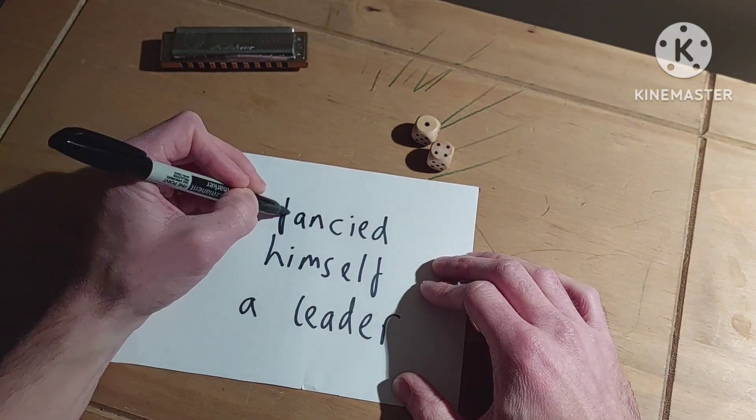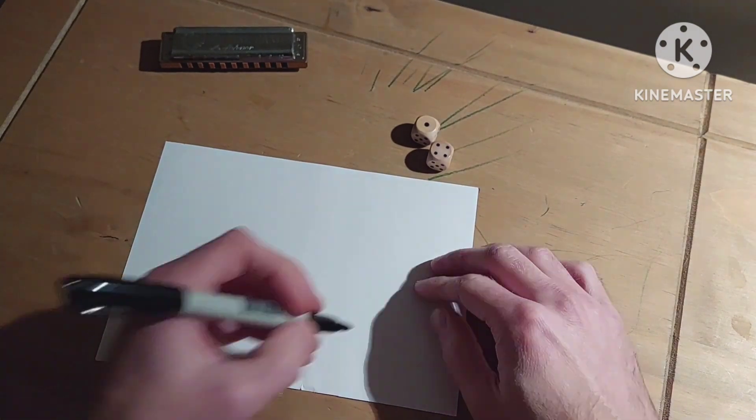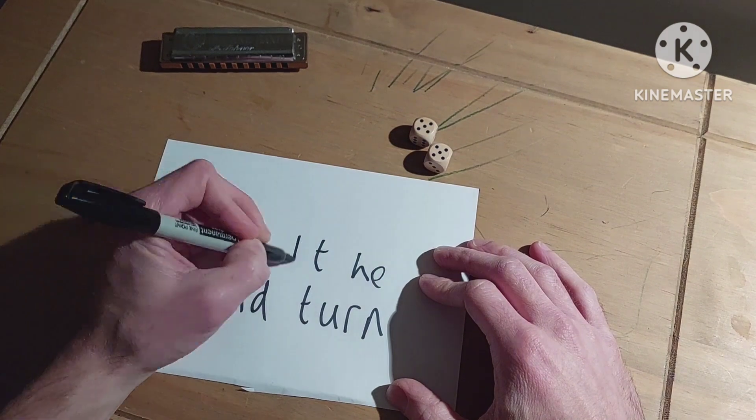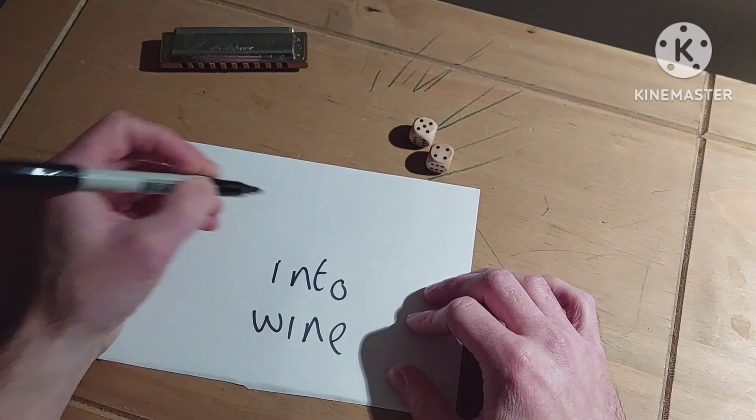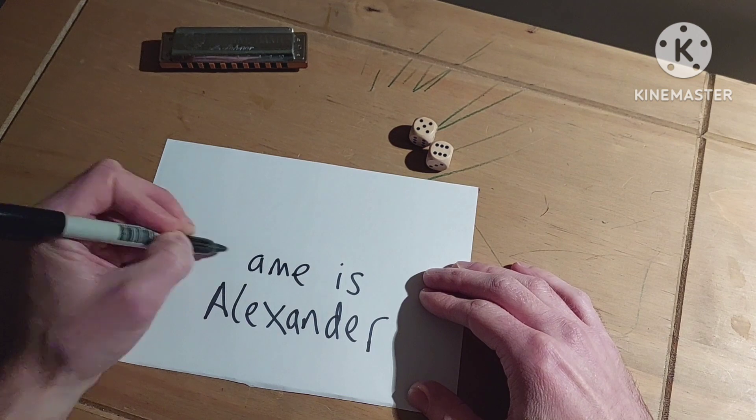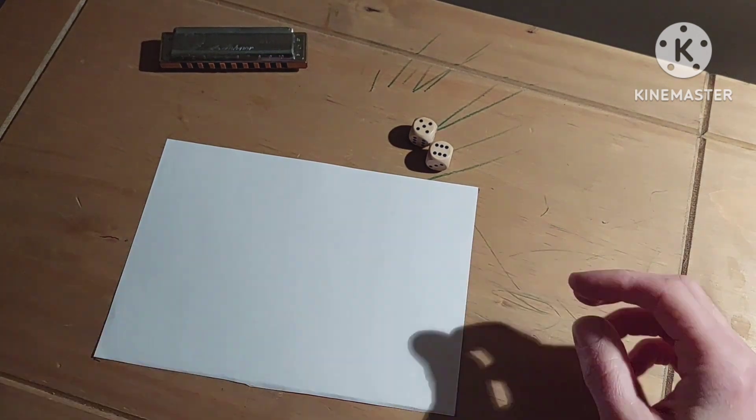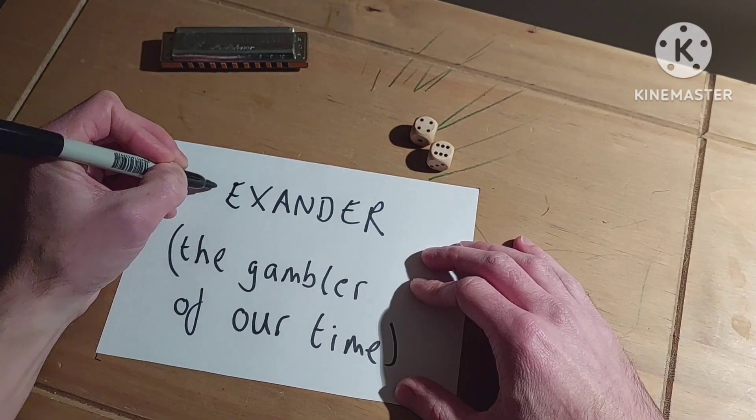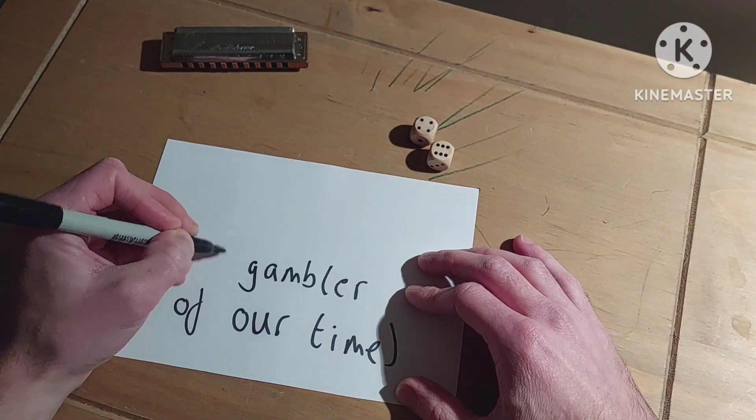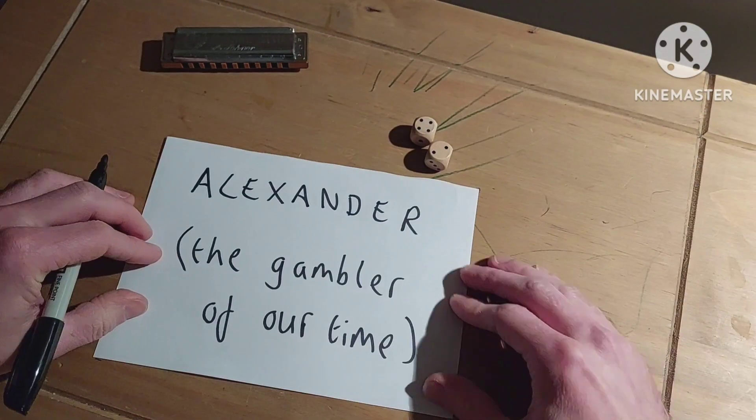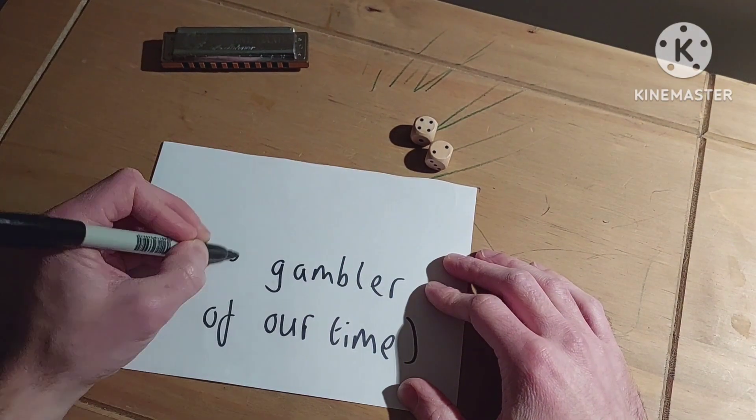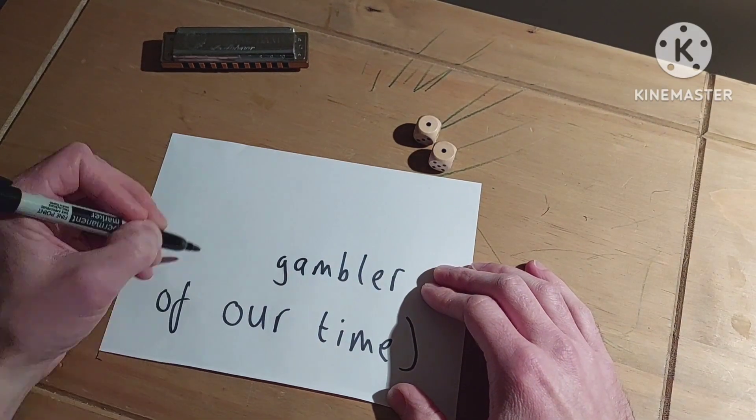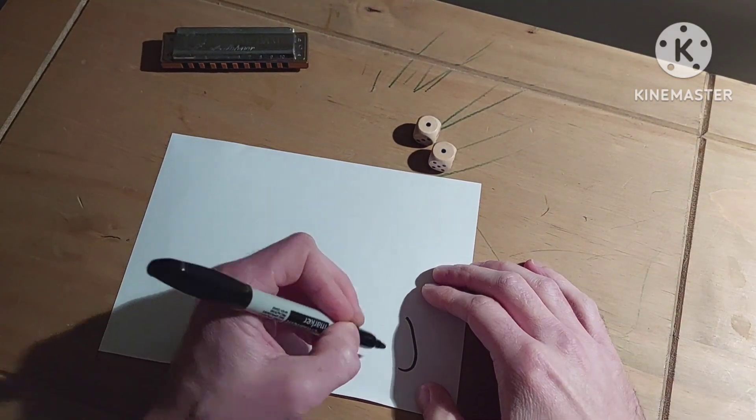He fancied himself a leader, a Churchill or a Caesar, thought he could turn water into wine. His name is Alexander, he believed his own propaganda. Alexander, the gambler of our time. Alexander, the gambler of our time. Alexander, the gambler of our time.